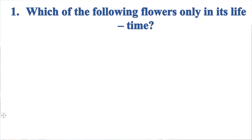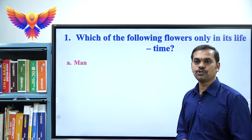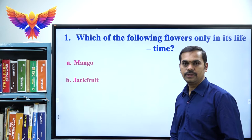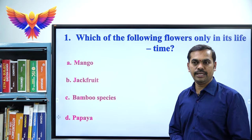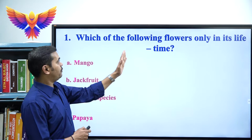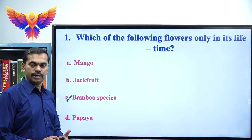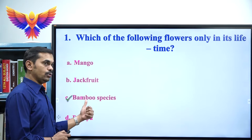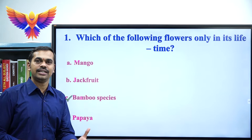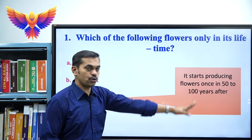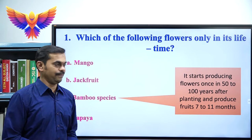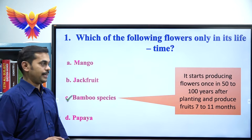Question 1: Which of the following flowers only once in its lifetime? Options are: A) Mango, B) Jackfruit, C) Bamboo species, D) Papaya. The correct option is C, bamboo species. The bamboo species produces unusual flowering — once in 50 to 100 years it produces flowers, and produces fruits after 7 to 11 months.